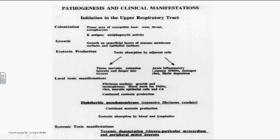Because of the toxin, an acute inflammatory response occurs with PMN cells, fibrin deposition, and leukocyte accumulation. This accumulation of inflammatory exudates and leukocytes produces a grayish exudate, forming a fibrin mesh containing PMN cells, RBCs, necrotic epithelial cells, and Corynebacterium diphtheriae — the pseudomembrane. Continuous exotoxin production causes this pseudomembrane to extend into deeper tissues.